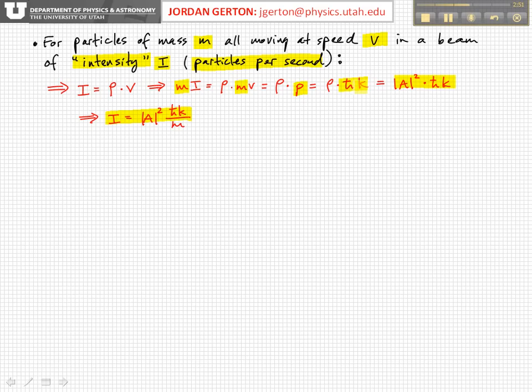So in the end what we get is that mI equals A² times ℏk. ρ equals A² as we showed on the last viewgraph. So in the end we have the intensity of the beam is related to the momentum of the beam—ℏk divided by m times the amplitude coefficient squared.